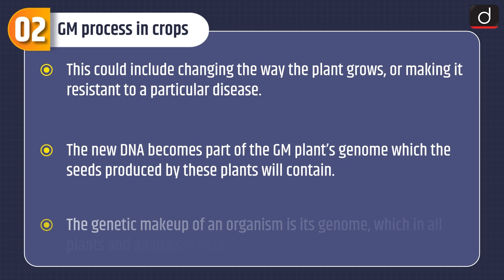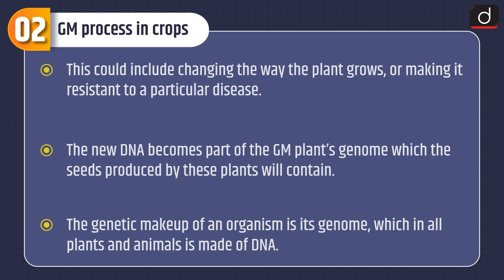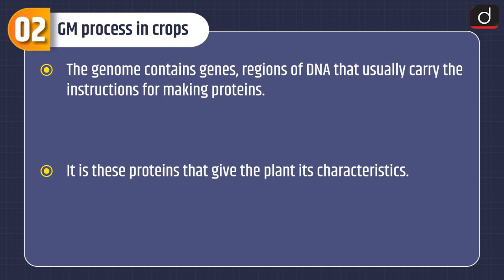The new DNA becomes part of the GM plant's genome, which the seeds produced by these plants will contain. The genetic makeup of an organism is its genome; in all plants and animals it is made of DNA. The genome contains genes — regions of DNA that usually carry the instructions for making proteins — and it is these proteins that give the plant its characteristics.